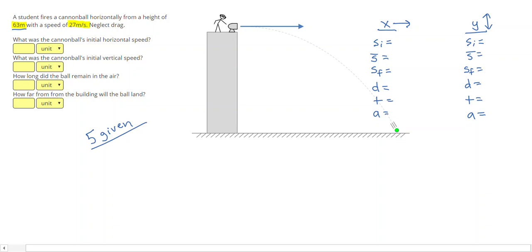So 63 meters, we see that is the height. Now height is generally measured vertically, so that is going to be my vertical distance is 63 meters. Next, it says a speed of 27 meters per second, that was the launch speed. The launch speed was to the right, so that means my initial horizontal speed will be 27 meters per second, which is another given.